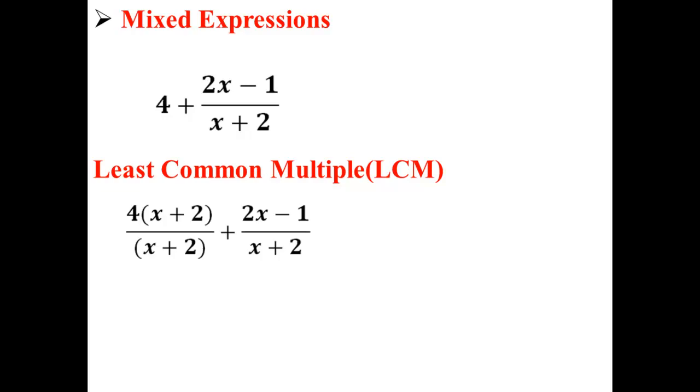We're going to multiply 4 by x plus 2 over x plus 2 in order to convert it so it will have the same denominator as the rational expression. And now the entire thing will be a rational expression.